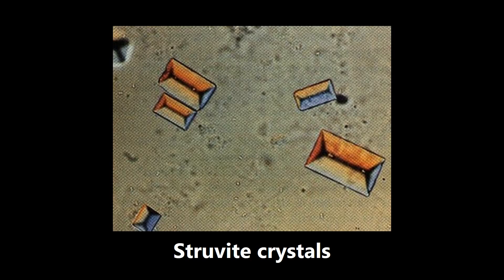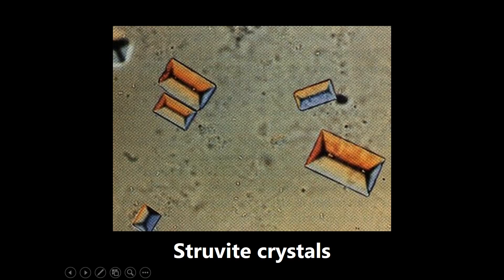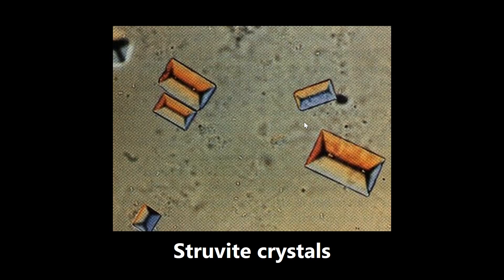This next image is an example of struvite crystals — kidney stones, nephrolithiasis. Another word for these is ammonium-magnesium-phosphate crystals, so don't get tripped up. They're described as having a coffin lid shape, which you can see pretty well here. These struvite kidney stones are caused by urease-positive bugs, the most important one being Proteus mirabilis. They are a cause of staghorn calculi — really big kidney stones that take up the entire shape of the renal pelvis. They can be extremely painful and may need to be removed by surgery. So if you see something coffin lid shaped, think struvite crystals, Proteus mirabilis, and staghorn calculi.